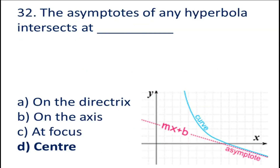Question number 31: Which of the following is the eccentricity for a hyperbola? A. 3/2.